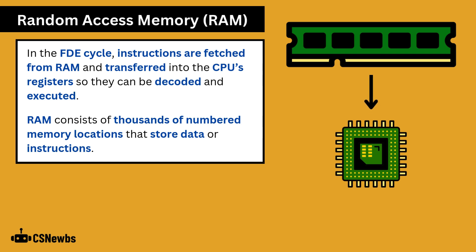In the FDE cycle, instructions are fetched from RAM and transferred into the CPU's registers so they can be decoded and executed. RAM consists of thousands of numbered memory locations that store data or instructions.